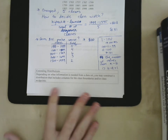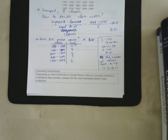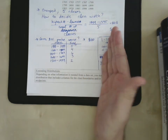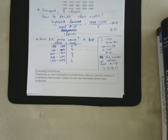The rest of this section looks at extended distributions. Depending on what information is needed from a data set, you may construct a distribution that includes additional columns for class boundaries, class midpoints, and class limits. I'm going to stop this video here — I like to keep things to about 20-ish minutes — and we'll pick up with Section 2.1 Part 2 in the next video.